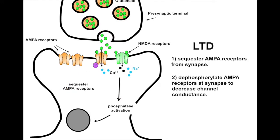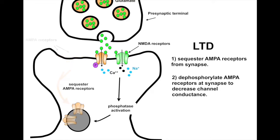Recall that long-term depression, or LTD, is generated by a low calcium influx, which causes some of the AMPA receptors to be sequestered from the synapse and the dephosphorylation of the remaining receptors, thereby reducing their conductance.